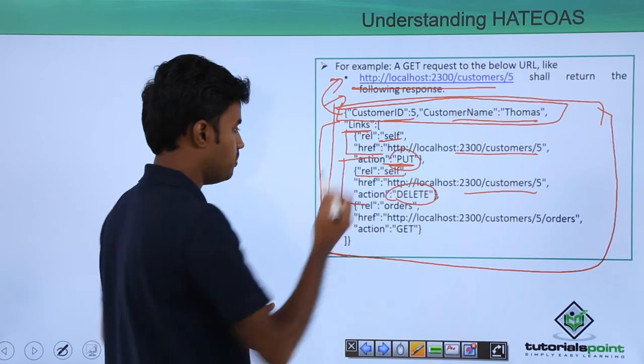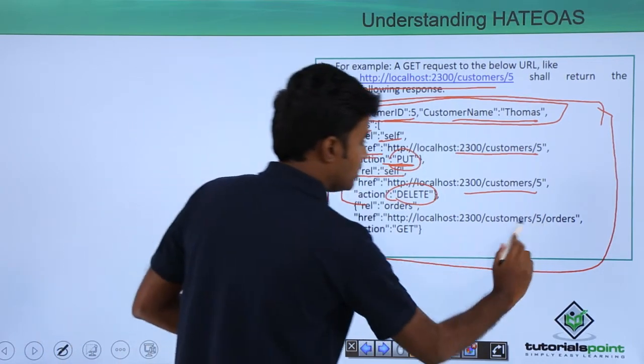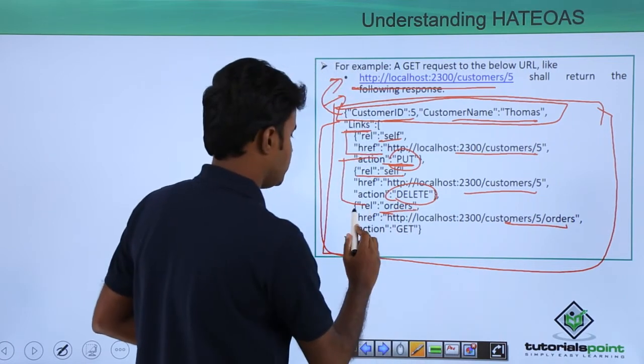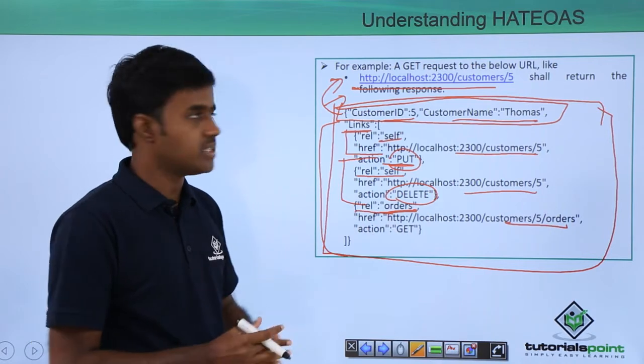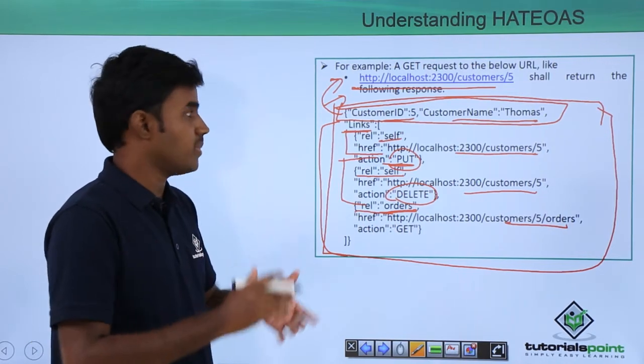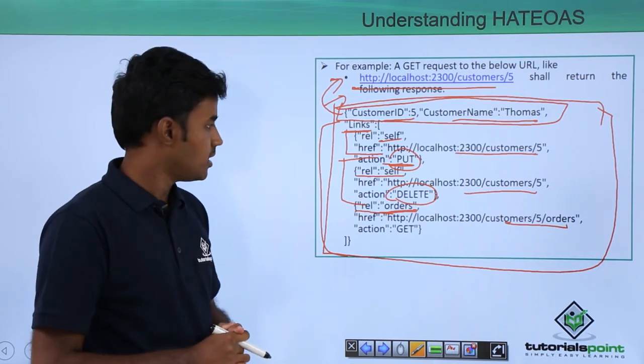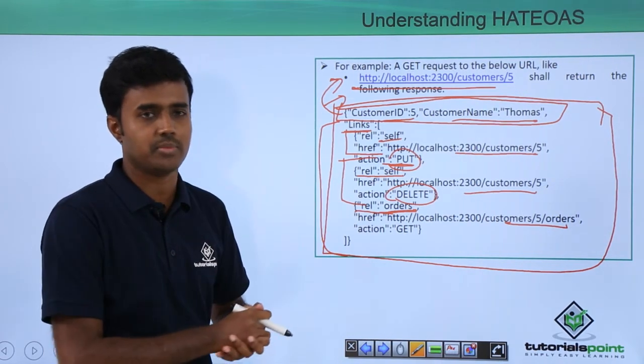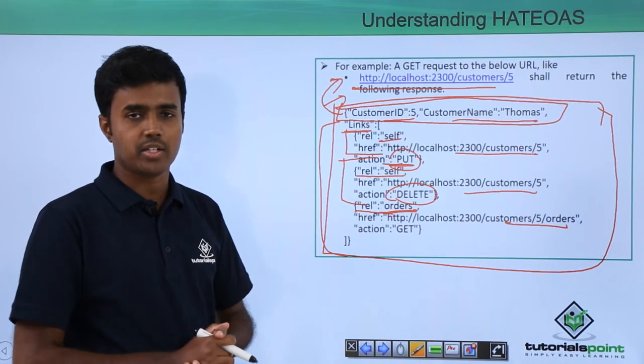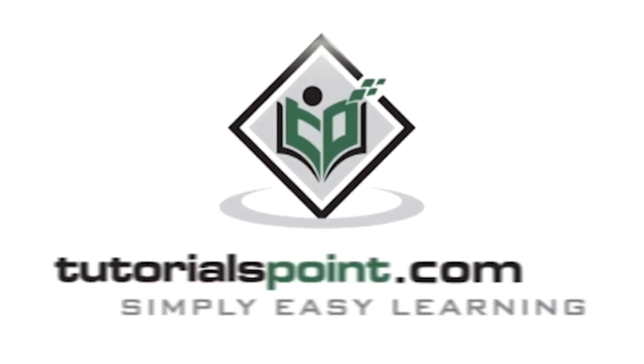You can also use the relative URL /orders to see what different orders this particular customer has had. So you get the customer and you get the different orders for the customer. That's all I have related to HATEOAS. Thank you, TutorialsPoint.com, simply easy learning.